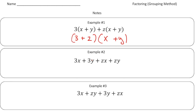Now down here, number two has the exact same expression as up here — they're equivalent but it looks different. So what you do is when you have something like this, you look at the terms and say: with these two terms, can I factor out a common factor? And then with these two terms, can I factor out a common factor? So we're going to break this into two groups.